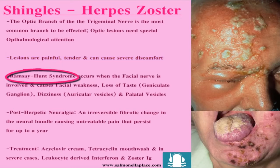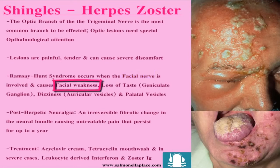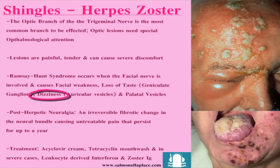Ramsay-Hunt syndrome occurs when the facial nerve — the seventh cranial nerve — is involved. It causes facial weakness and loss of taste if the geniculate ganglion is involved. It may also cause dizziness if there are auricular vesicles around or in the external ear. Quite often we can also see palatal vesicles on the hard palate of the oral cavity.